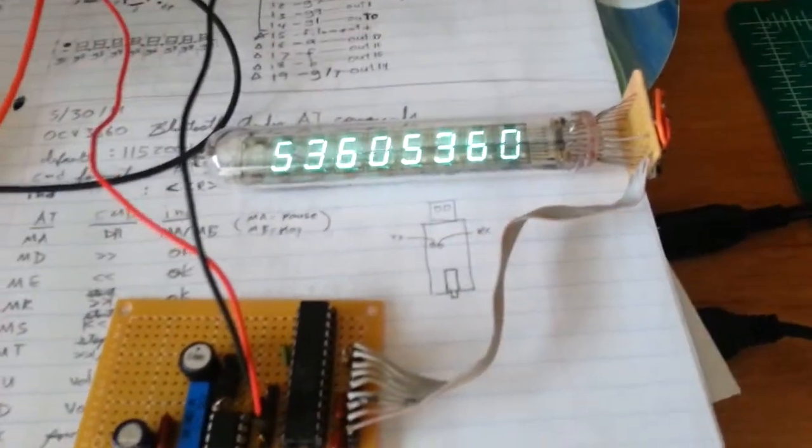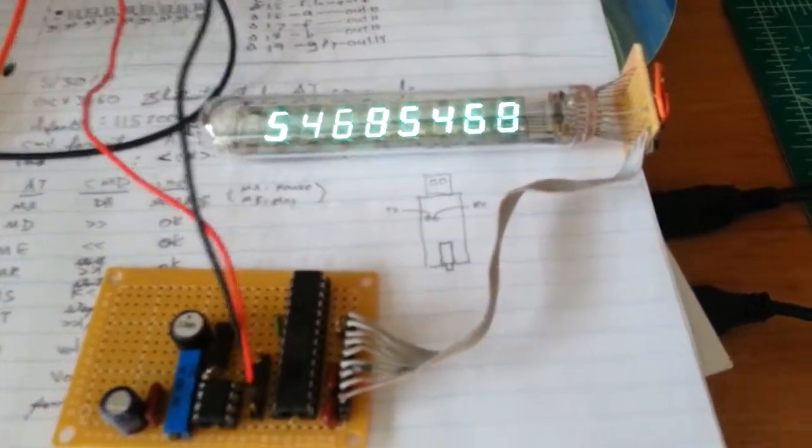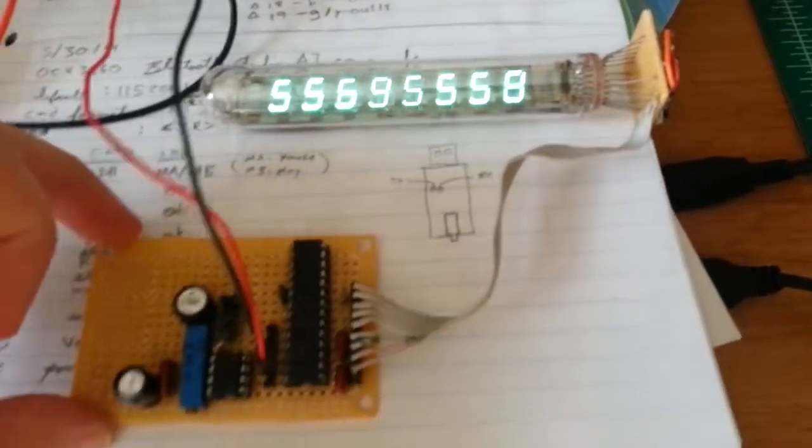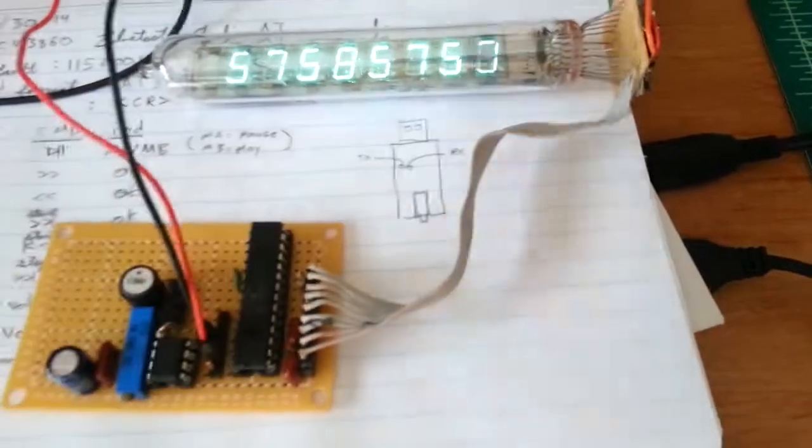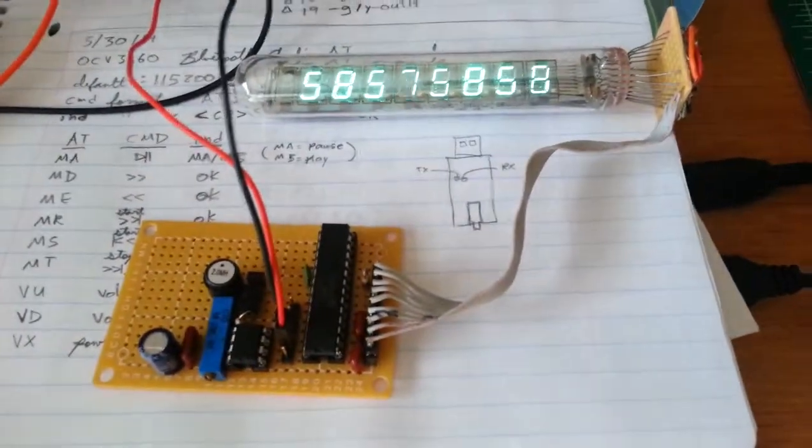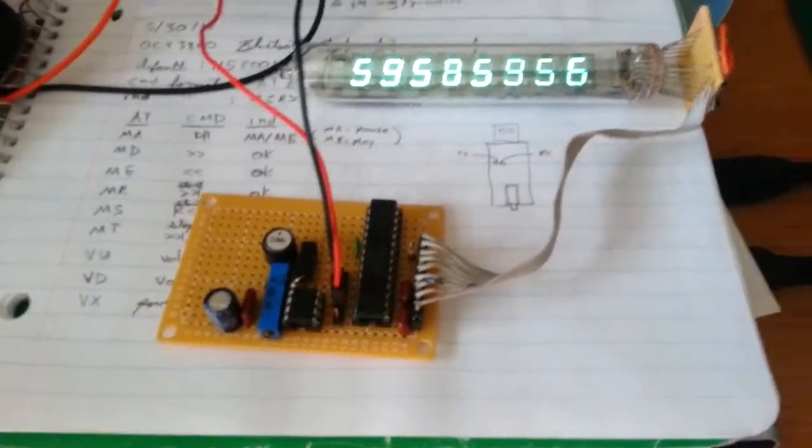That flicker isn't apparent in real life. But other than that, all I have to do is add some switches, add the real-time clock module. I left plenty of space for that, and I can actually button up this project.